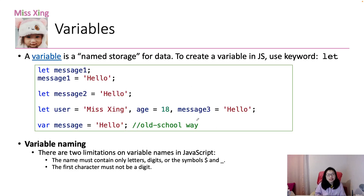Let's take a look at what is a variable. You can think a variable is a named storage for data. Suppose you want to store a person's age — you can define a variable, and this variable is a storage area to store the user's age or name.